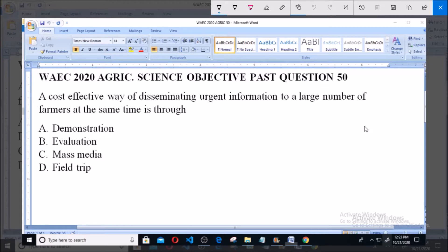A cost-effective way of disseminating urgent information to a large number of farmers at the same time is through: A. Demonstration, B. Evaluation, C. Mass Media, D. Field Trip.